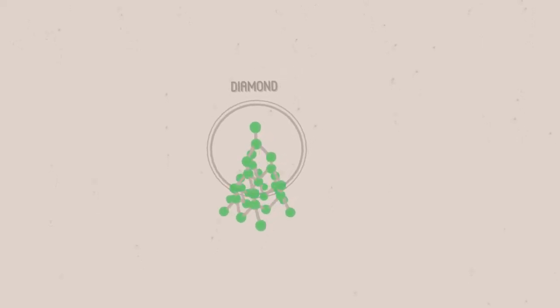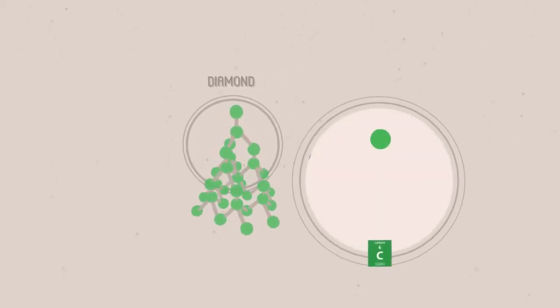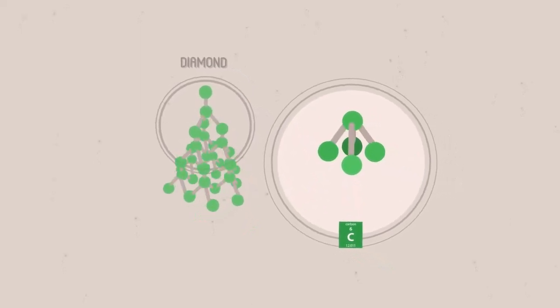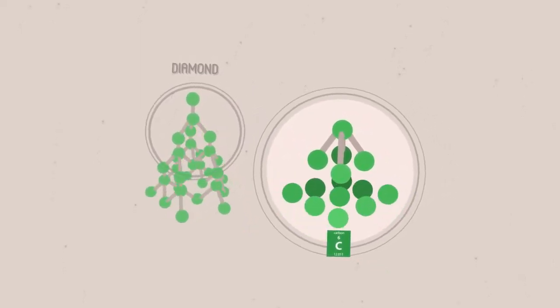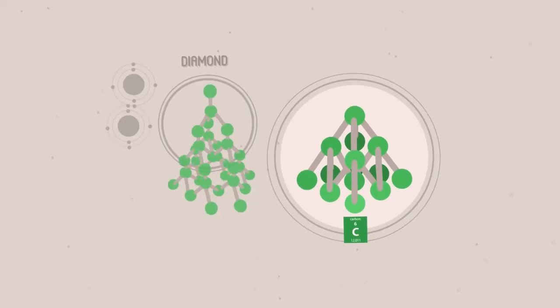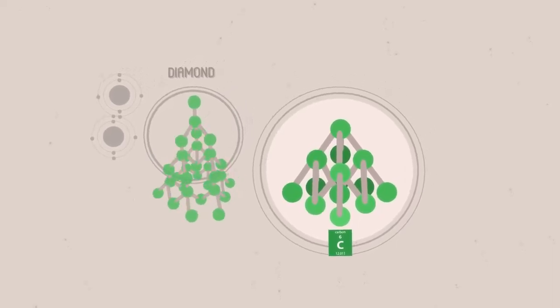One common example is diamond, which is made of carbon. Each carbon atom forms four covalent bonds, because it has four electrons in its outer shell to share, and has space for four more.